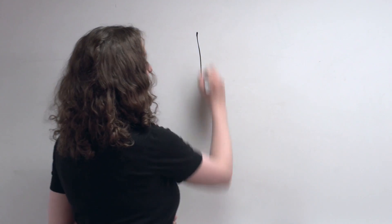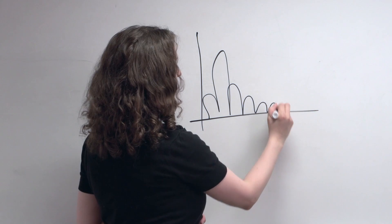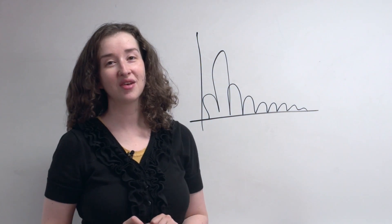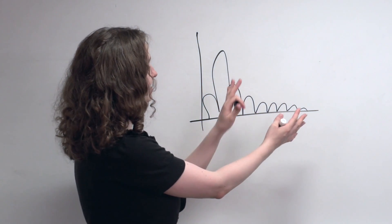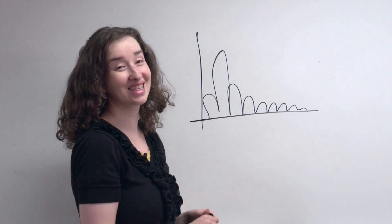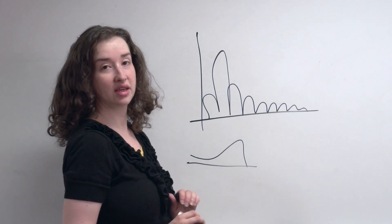Any time your data consists of distances, times, or money — any value that has to be positive — it's very likely that a histogram of those values would be skewed toward the right. As a side note, this term can be confusing because the distribution looks like it's leaning toward the left. The best way to remember it is that it's the opposite of the way it's leaning. This is a right-skewed distribution, and a left-skewed distribution would look like the mirror image.